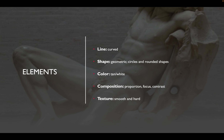Next we'll talk about the elements of the sculpture. When we look at the lines, we see that they are more curved. The shape is filled with geometric circles and rounded shapes. Colors were more tan and white, with the composition being proportional, focused, and showing contrast. The texture was smooth and hard.